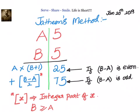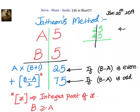Let us take one example. We have 25 multiplied by 45. We know that our answer is divided into two parts. For the right-hand side, 4 minus 2 is equal to 2, which is even, so the right-hand side will be 25.